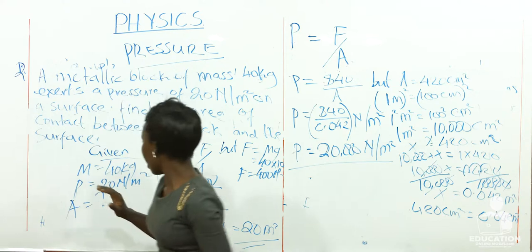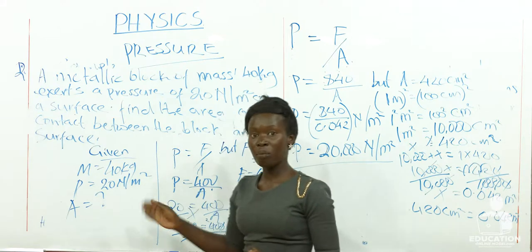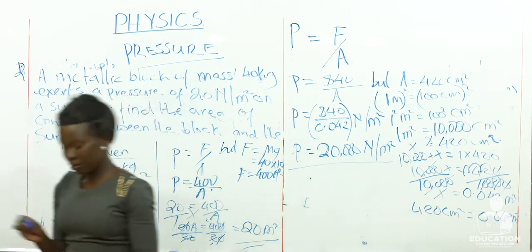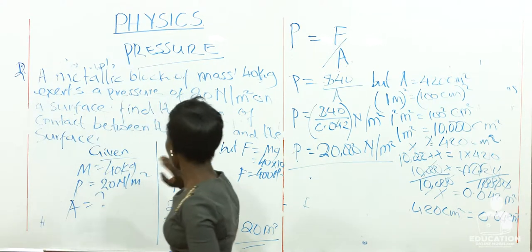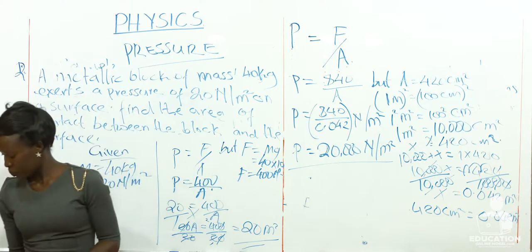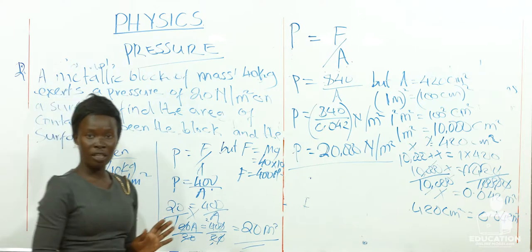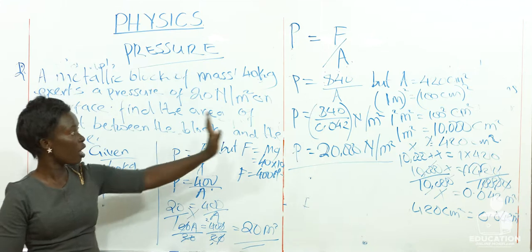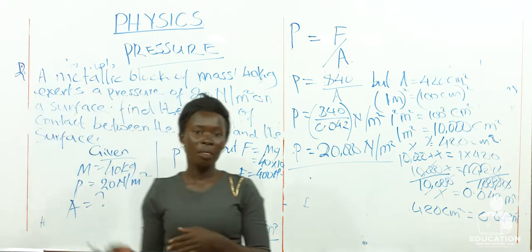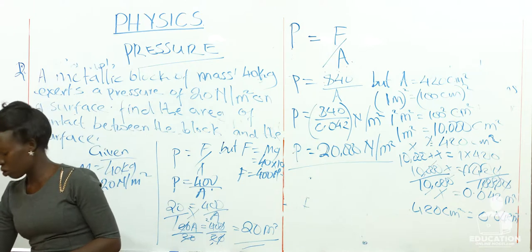I hope you now understand how to find pressure in solid, and that even when the area is not given directly, you can find it from the formula. The major things to know are: the definition of pressure, the formula P = F/A, and the two factors that pressure in solid depends on — the area of contact and the force applied.